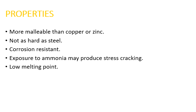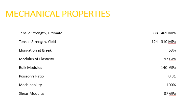Its melting point is low. Now we see some mechanical properties of brass. The ultimate tensile strength of brass is 338 to 469 megapascal. Yield tensile strength of brass is 124 to 310 megapascal, and the elongation at break is 53 percent. Modulus of elasticity of brass is 97 gigapascal, and its bulk modulus is 140 gigapascal.